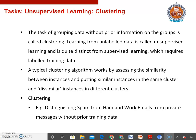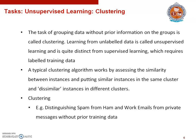Under unsupervised learning, let us first discuss clustering. Both classification and regression assume the availability of a training set of examples labeled with true classes or function values. The task of grouping data without prior information on the groups is called clustering. Learning from unlabeled data is called unsupervised learning, and is quite distinct from supervised learning, which requires labeled training data.